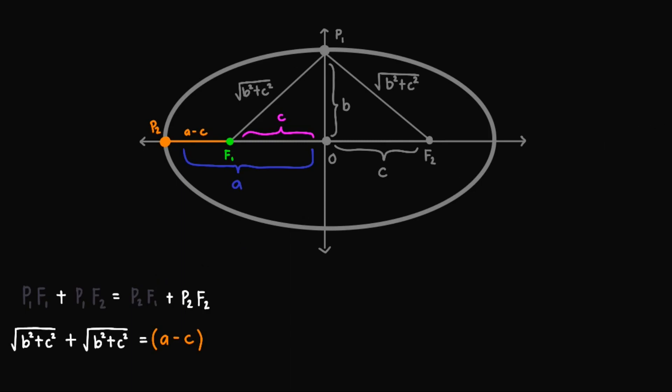We now move on to the last one, which is the line segment P2F2, or this whole part. This one is easy since we are given A and C. To obtain this whole length, we simply add this up to obtain A plus C.